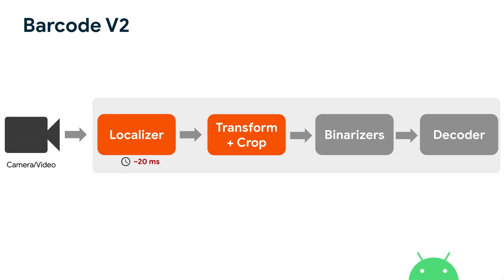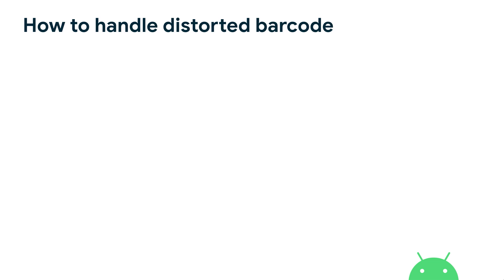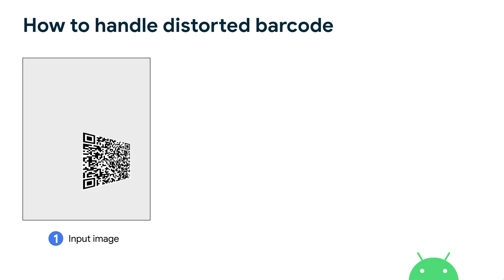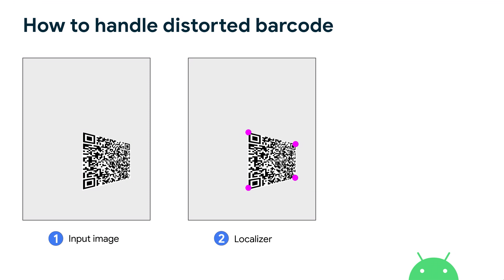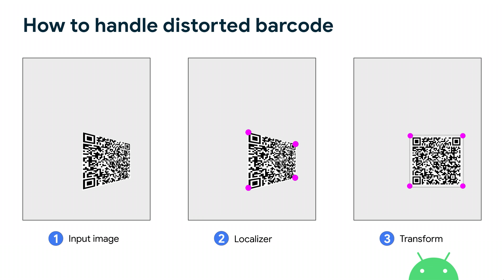So we came out with Barcode V2, which adds two more steps before the decoder. The first is a new machine learning model that finds the barcode inside the image. The second is an algorithmic module that transforms the crop before sending it to the decoder. For a distorted barcode, we first localize it by finding its corner points, then apply a perspective transform to align it vertically and horizontally — then the decoder is happy.